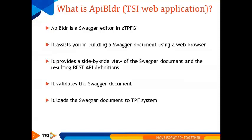API Builder is a Swagger editor provided in TPF GI. It assists in building a Swagger document within a browser embedded in GI itself. API Builder gives a side-by-side view as you add information, providing a dynamic view of the Swagger document being generated on the right side. Once the document is created, there is an option to validate it and load it into the developer system. These are the features API Builder provides.